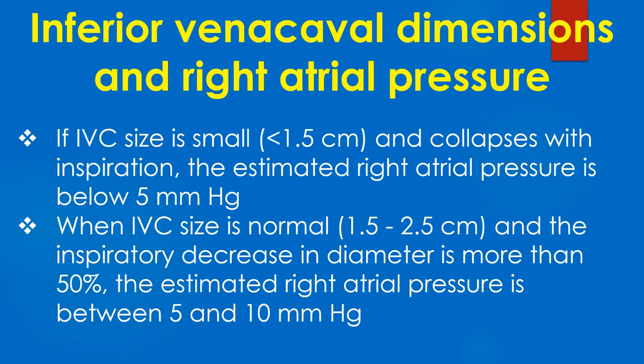If IVC size is small and collapses with inspiration, the estimated right atrial pressure is below 5 mmHg. When IVC size is normal and the inspiratory decrease in diameter is more than 50%, the estimated right atrial pressure is between 5 and 10 mmHg.